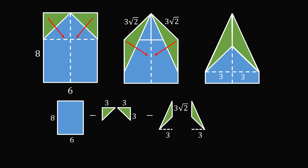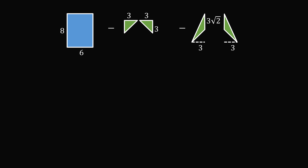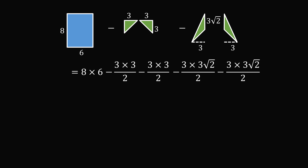So we're now ready to do the calculation. The area of the original piece of paper is 8 by 6. Then we subtract out two triangles which have legs that are equal to 3. Then we subtract out the areas of two triangles which have a height of 3 and a base of 3 root 2. We get the result of 39 minus 9 root 2, which is approximately equal to 26.272. And that's the answer.